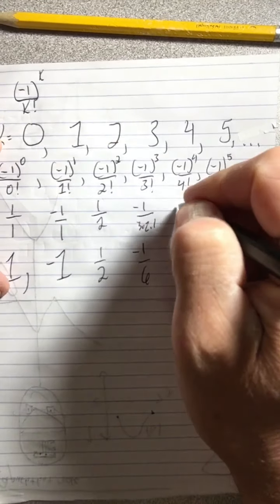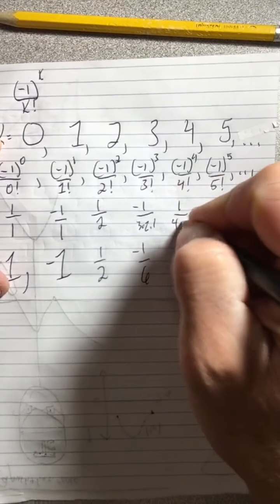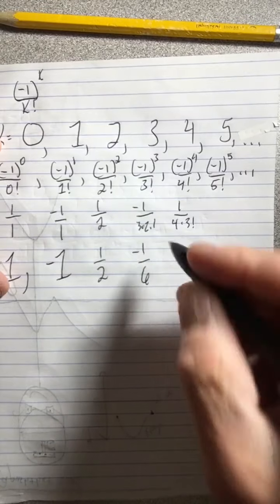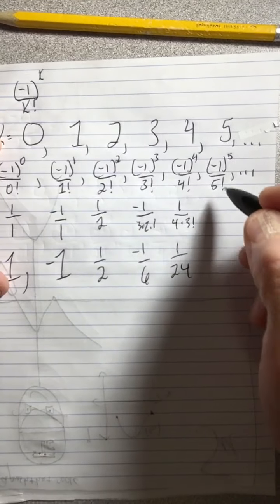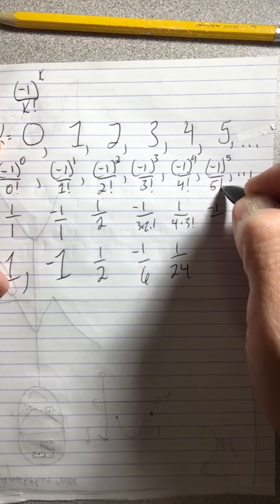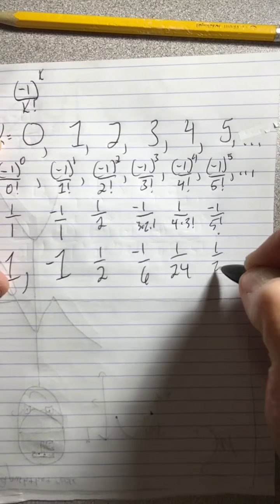Then this is going to be positive, and 4 factorial is 4 times 3 factorial, because it's 4 times 3 times 2 times 1, but 4 times 6 is 24. And then I have negative 1 to the fifth, that's going to be negative, and then 5 factorial we did on the other page, that's going to be 120.